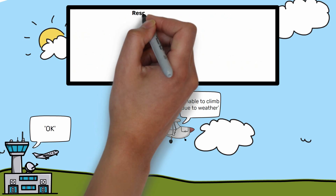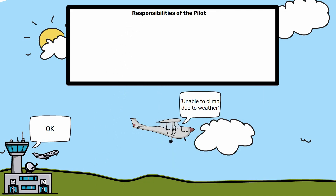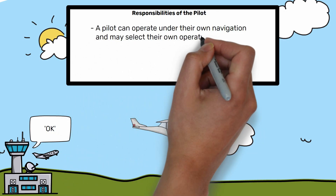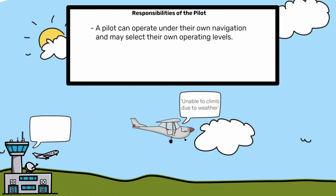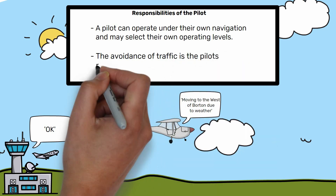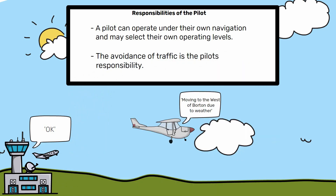Additionally, a pilot can operate under their own navigation and may select their own operating levels. During which, and if required, a pilot is to advise a controller if they need to change their general route, manoeuvring area, or level. But ultimately, the avoidance of traffic is the pilot's responsibility.